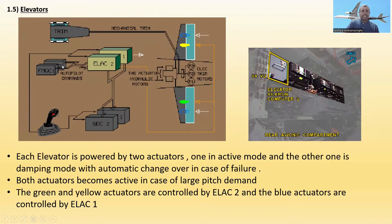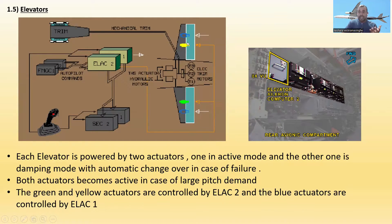1.5 — Elevators. There are two elevators. Each elevator is powered by two actuators — one in active mode and the other in damping mode, with automatic changeover in case of failure. Both actuators become active in case of a large pitch demand. The green and yellow actuators are controlled by ELAC 2, while the blue actuators are controlled by ELAC 1.